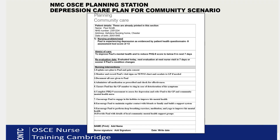Now we write the nursing interventions, adapted for the community. Number one: explain the care plan to Paul and gain consent. Number two: monitor and record Paul's vital signs on a NEWS chart and escalate to the GP if needed — because in the community we don't have a nurse in charge or a medical team, so we escalate to the GP. Number three: document all care given to Paul.